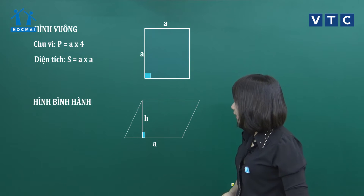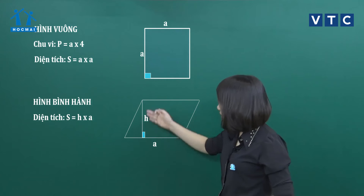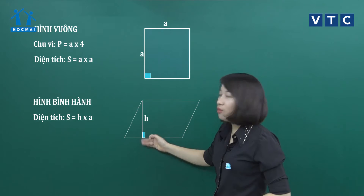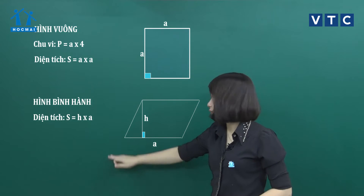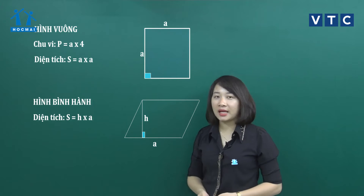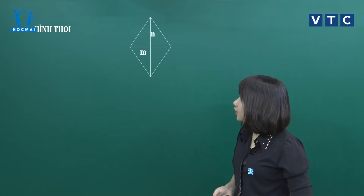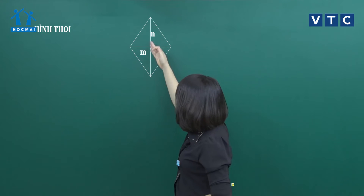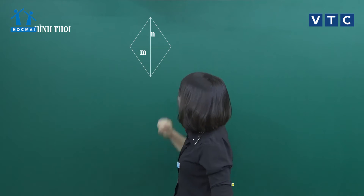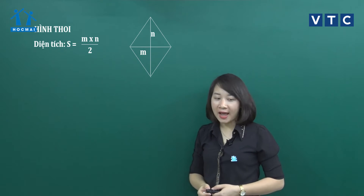Với hình bình hành thì trong hình bình hành chúng mình sẽ có chiều cao là H, độ dài đáy là A. Vậy diện tích của hình bình hành sẽ là H x A. Trong hình thoi có độ dài đường chéo thứ nhất là N, độ dài đường chéo thứ 2 là M. Công thức tính diện tích cho hình thoi sẽ là M x N chia cho 2.